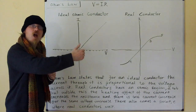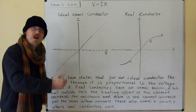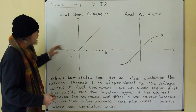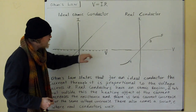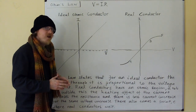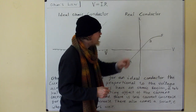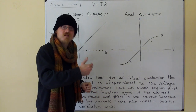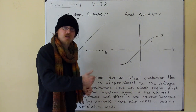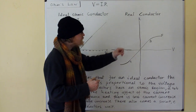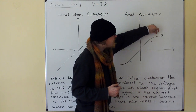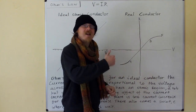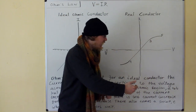As we increase the voltage across our conductor, we directly proportionally increase the current through it, which means that the IV curve is a straight line. Now, in the real conductor, there is an ohmic region where the current is directly proportional to the voltage, but outside the ohmic region, there is another region where as we increase our voltage, we get less and less current return.